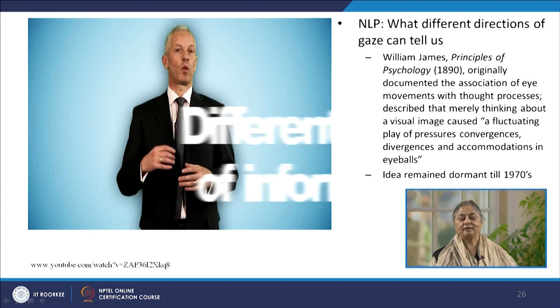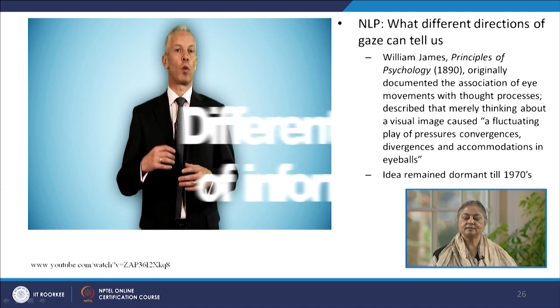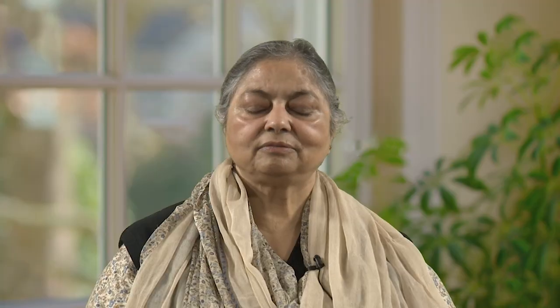However, this idea had remained dormant till the 1970s. The video which we would play right now encapsulates the basic findings of NLP as far as eye contact is concerned — that we hold different pieces of information in different parts of our brain, and usually when thinking about a particular type of information, our eyes will go in one particular direction.